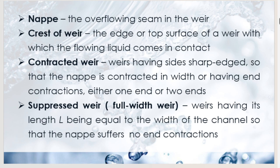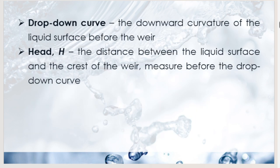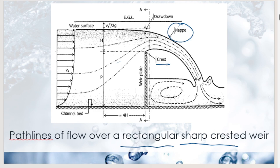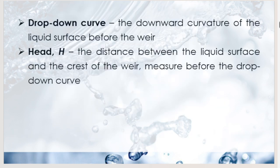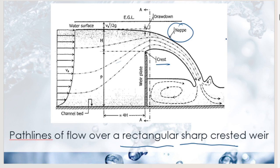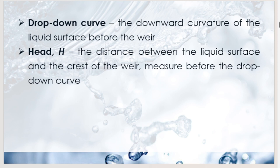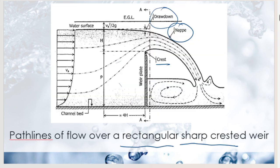We also have the Rebock and Chow formula. For English units: C-sub-w = 3.27 + 0.40(H/P). For SI units: C-sub-w = 1.84 + 0.22(H/P). Here H is the upstream head, P is the height of the weir crest, and D = H + P is the total upstream depth.